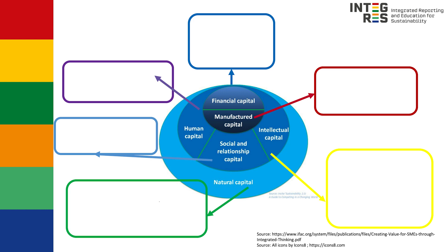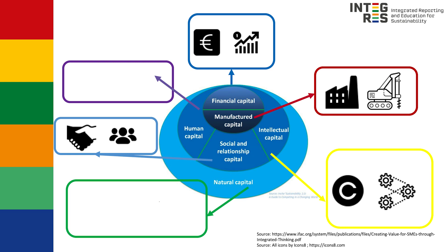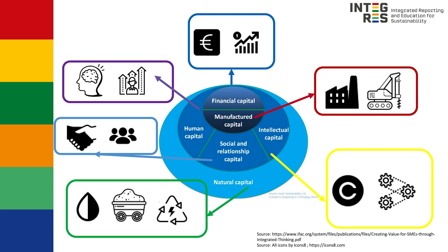I just explained the six capitals model and now I will give a description of the six capitals and apply it for SMEs. The financial capital is the equity, debts and grants available to an SME. The manufactured capital is the tangible goods and infrastructure that an SME owns, leases or has access to. Intellectual capital is the knowledge, intellectual property, systems and processes that an SME has. The social and relationship capital is an SME's brand and reputation, its relationships with the community, customers, business partners and others in the value chain. Human capital is the skills, experience and motivation that employees and management of an SME have. Natural capital is an SME's access to environmental resources that the company needs for the production of goods or the delivery of services.